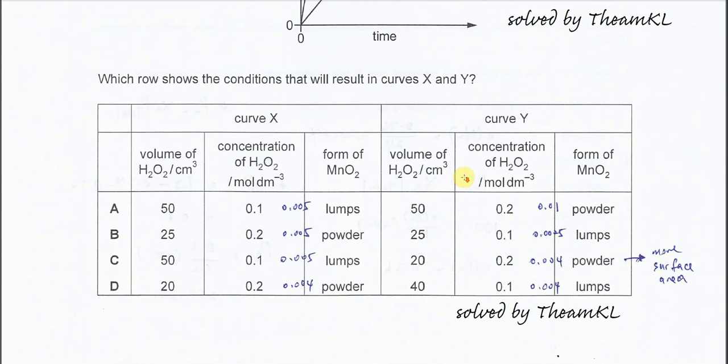First we calculate the moles. For option A, the moles of H2O2 used for X is 0.005, and for Y it's 0.01. So this one is out because the moles show that for curve X the mole of H2O2 used is less than Y, which is not really true.